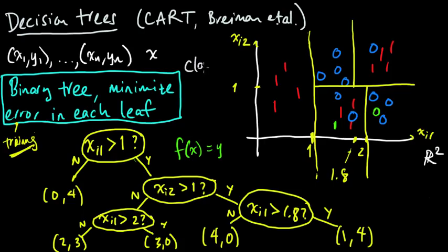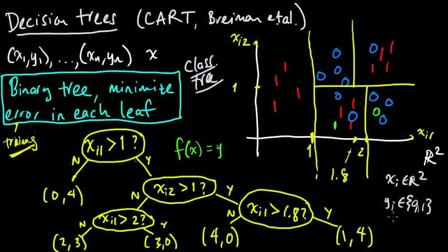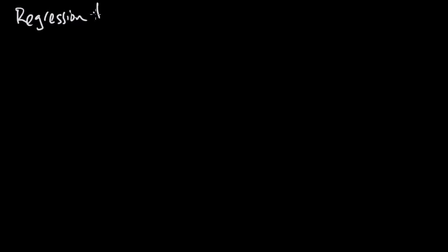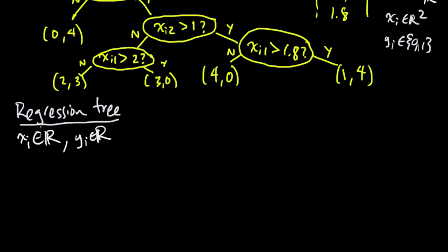We just saw an example of a classification tree, just a nice simple example. In that case, the x_i's were in R2 and the y_i's were in just {0,1}, so that was a simple binary classification case. In this video, we're going to explore a regression tree. For our regression tree example, we'll take a simple case where the x_i's are just real-valued and the y_i's are also real-valued. This is an oversimplification — taking the x's to be real-valued — but at least we can draw an example in this 1D case that we can visualize.